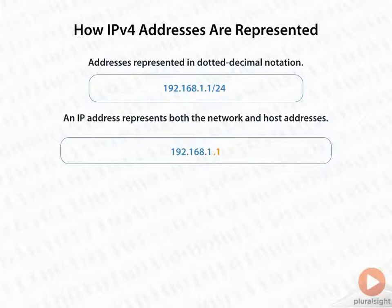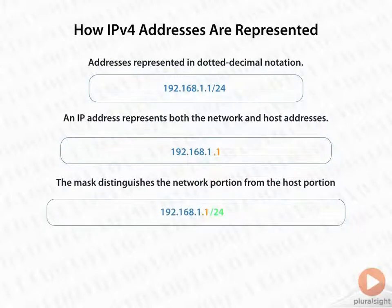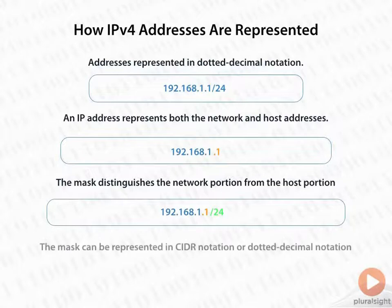Just looking at a flat address, it's not very easy to determine which is network and which is host, and that's why we have the mask portion. That slash 24 tells us that the first 24 bits of the address — the first three octets — are the network portion, and that last octet is the host portion.